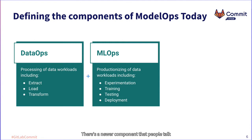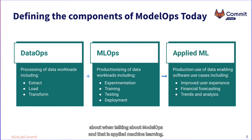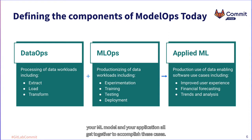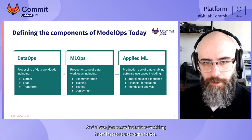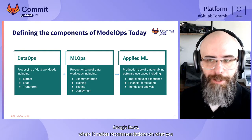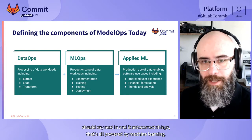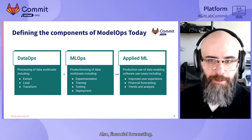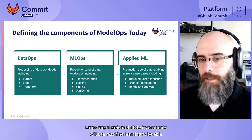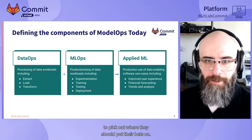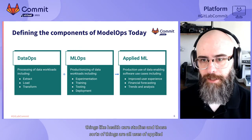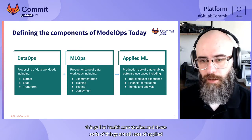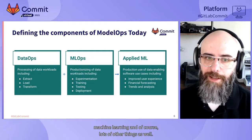There's a newer component called Applied Machine Learning, where your data, your ML model, and your application all come together to accomplish use cases. These can include improved user experience — like Google Docs making next-word recommendations and auto-corrections — financial forecasting for investment decisions, trends and analysis like healthcare studies, and many other applications.